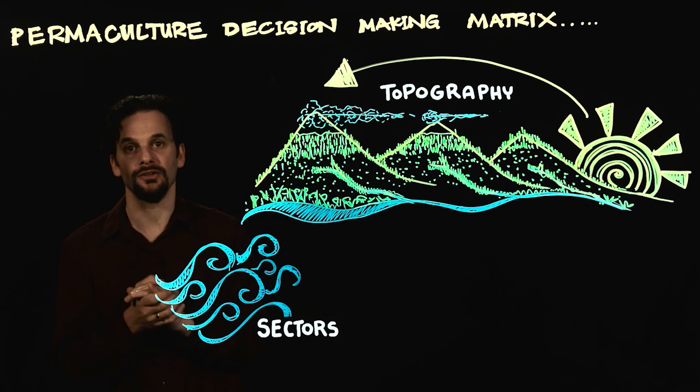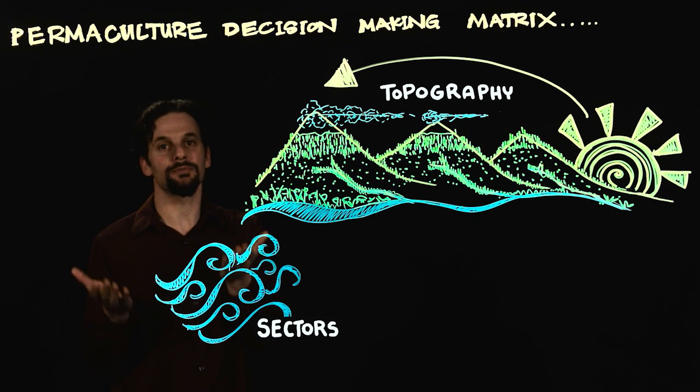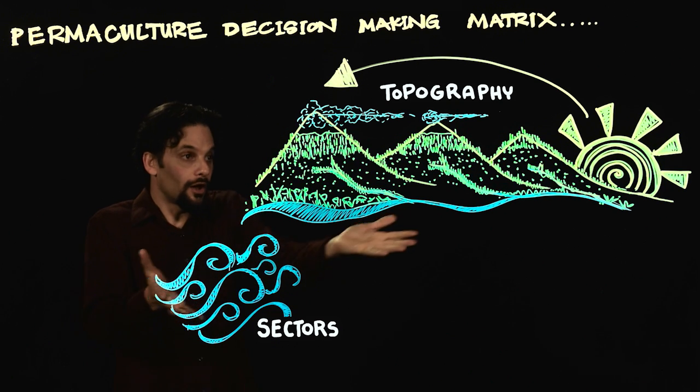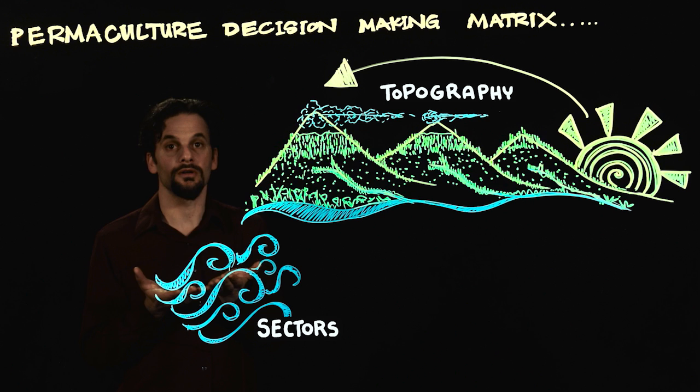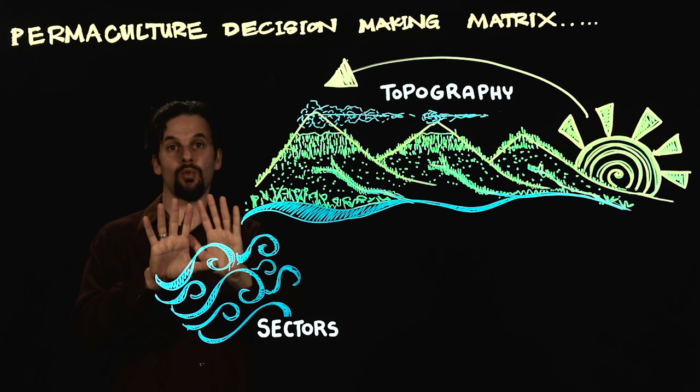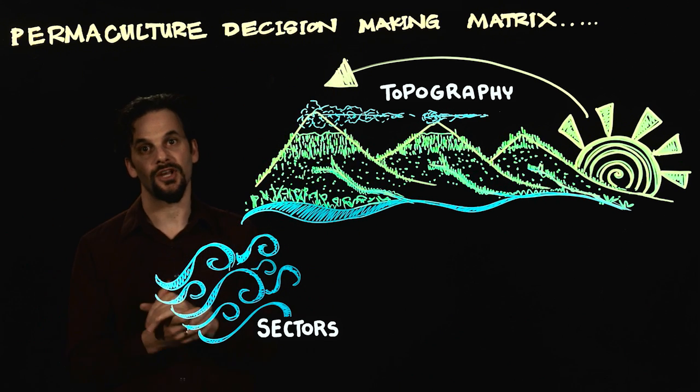We map these sectors and then our design becomes a direct response to them. I want to welcome the sun in winter, block or deflect wildfire, shade from hot summer sun.